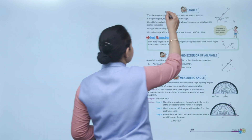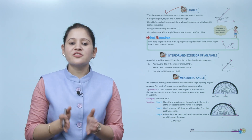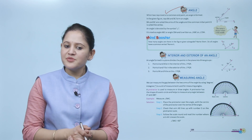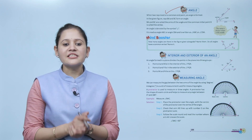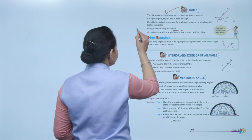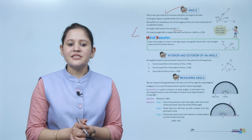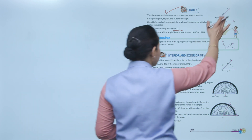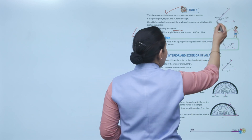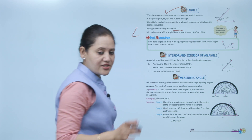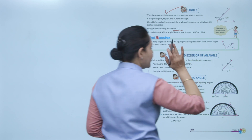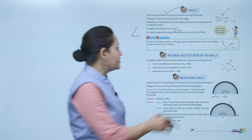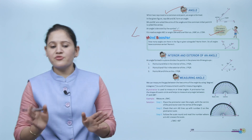Next is angle. When two rays meet at a common end point, an angle is formed. In the figure, rays BA and BC form an angle. BA and BC are called the arms of the angle and the common initial point B is called the vertex. An angle is denoted by the symbol ∠. It can be written as angle ABC or angle CBA — always write the vertex point in the middle.